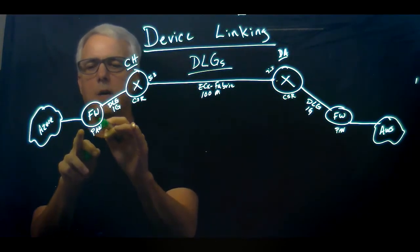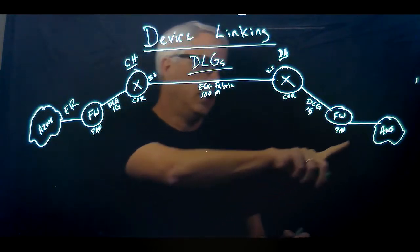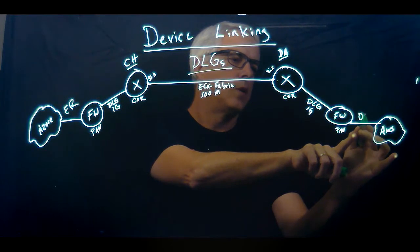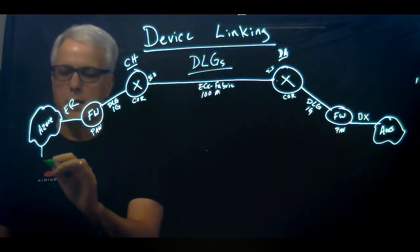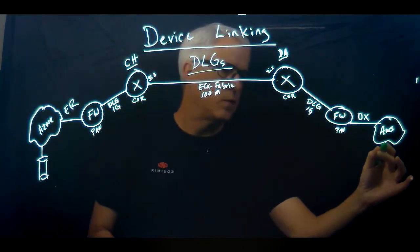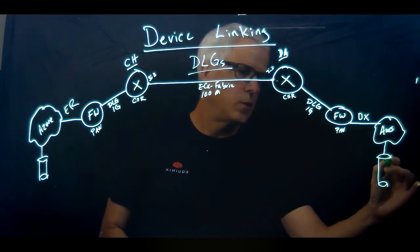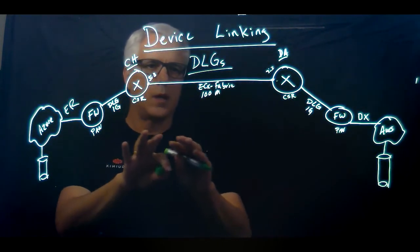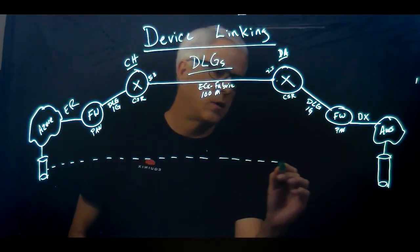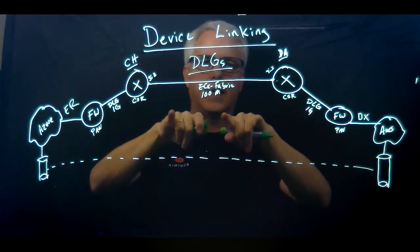And then here, this firewall is going to create a connection to Azure over ExpressRoute, for example. This firewall is going to create a connection to AWS over Direct Connect. So I've got, let's say a database over here, and a database over here at AWS, and I want to replicate traffic between the two. This is how you can build out a complete topology to allow data to be replicated from Azure all the way across to AWS using device link groups to connect network edge devices.